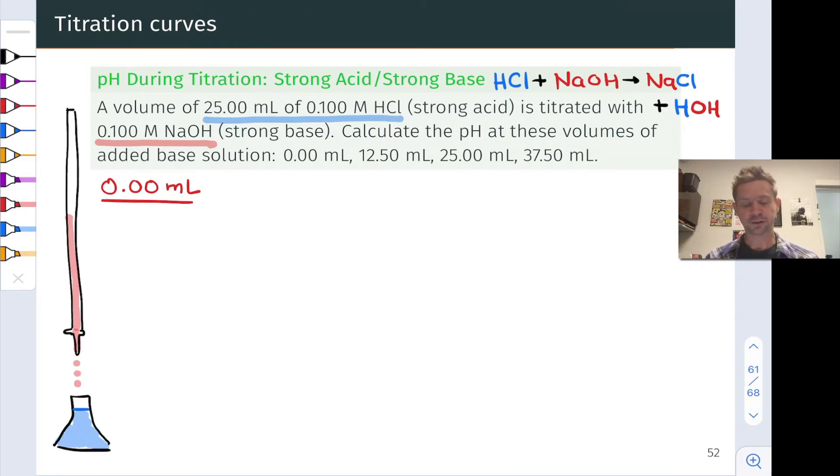We want to calculate the pH at four volumes of added titrant, added base solution: none when we just have the HCl solution, 12.5 milliliters, 25 milliliters, and 37.5 milliliters. These are strategically chosen volumes that are going to reveal important ideas to us.